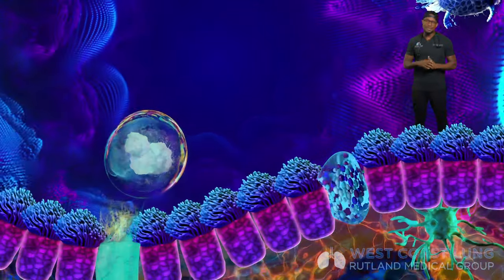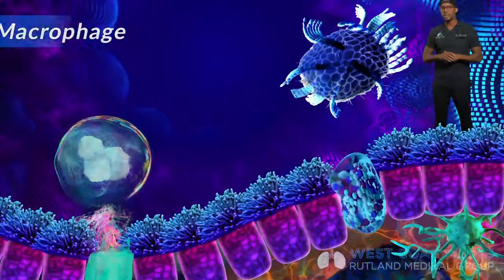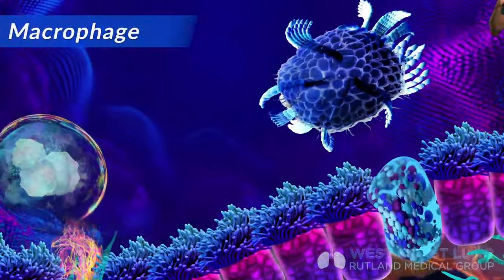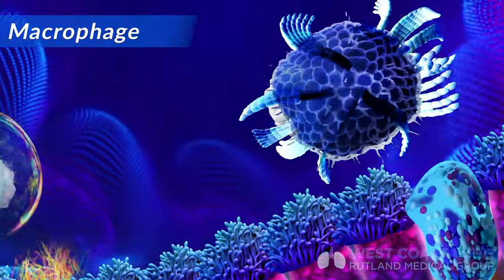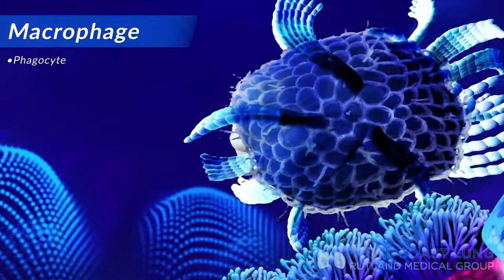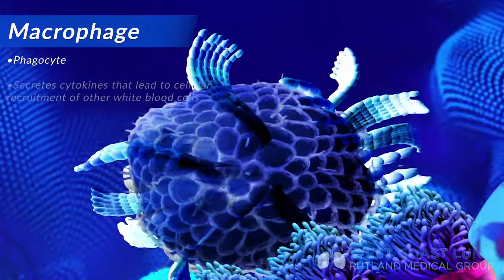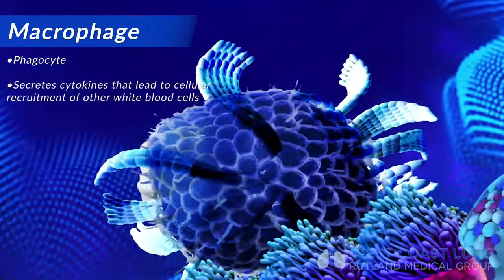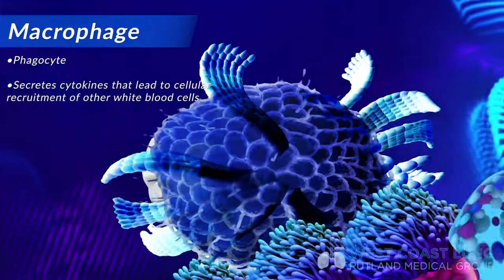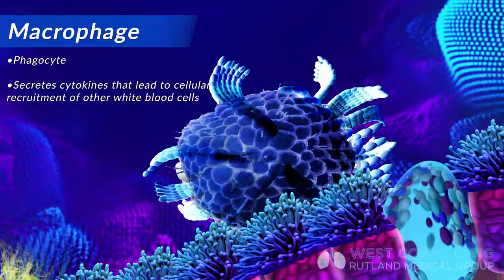The second cell involved is the macrophage. A macrophage is another type of phagocyte. Macrophages also secrete certain cytokines that lead to the cellular recruitment of other types of white blood cells.